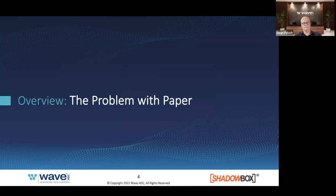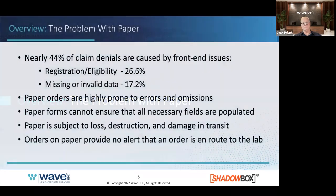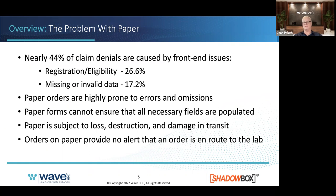The problem with paper requisitions is that they're costly — they create errors and add stress and delays to revenue cycle performance and claim reimbursement. They're hard to read, time-consuming for referral sources to complete accurately, and it's a manual process. Anytime you have a manual process, you're introducing the potential for human error. There's also no safety net to ensure that everything needed to build a claim is on the form.